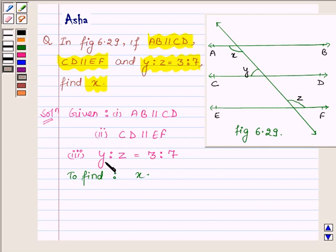Since the ratio of Y and Z is 3:7, let Y = 3T and Z = 7T, where T is any real number.